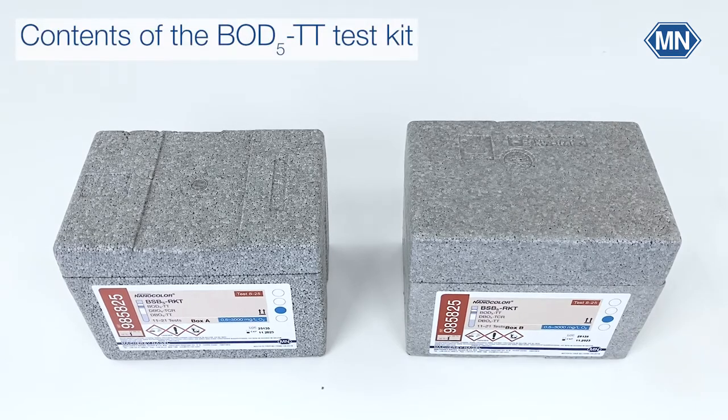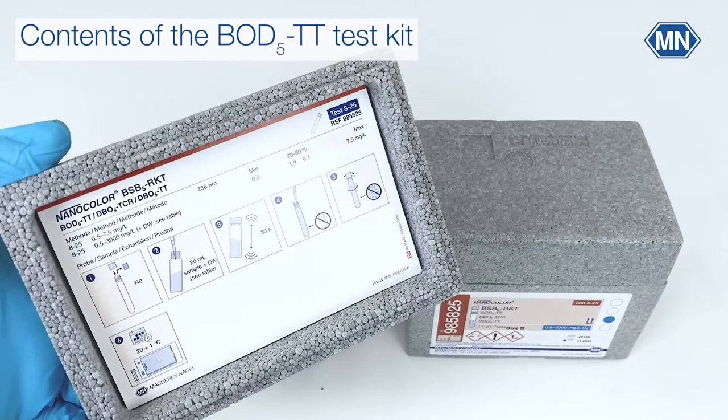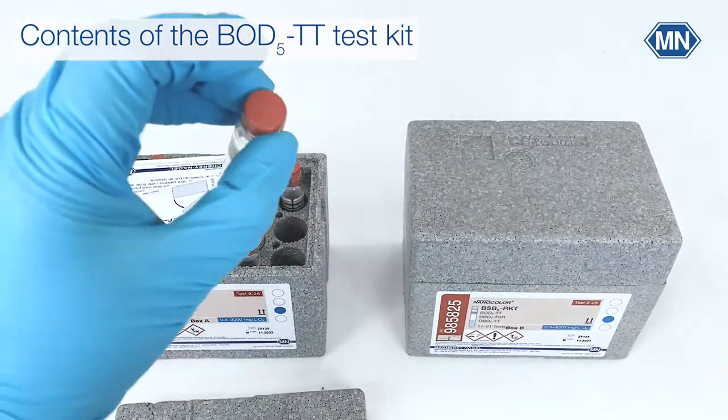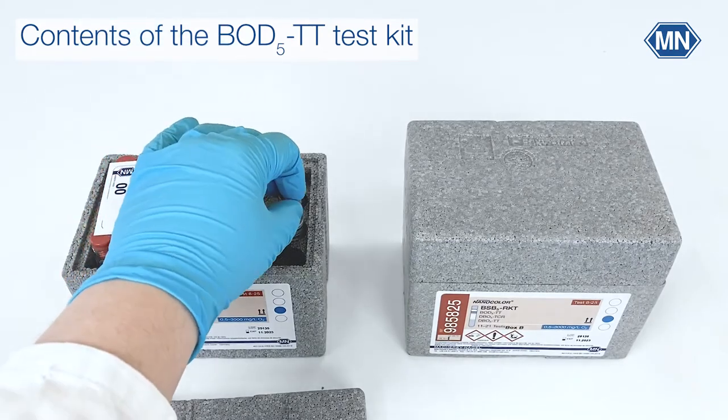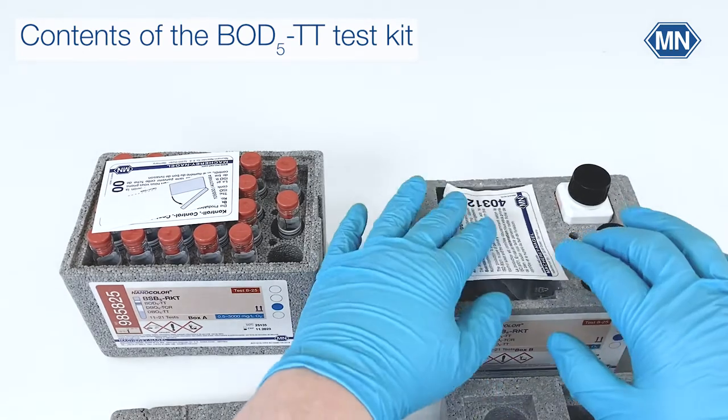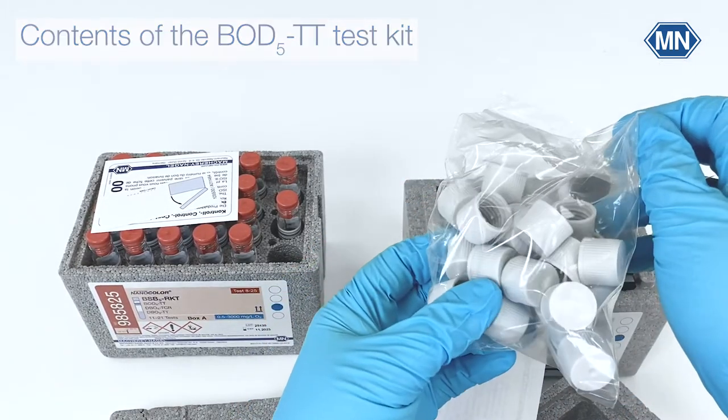Each test kit comes with two boxes. In box A you will find the pictogram instructions in the lid. You will also find 22 test tubes with rubber stoppers. In box B you will find additional reagents and also 22 screw caps for closing the test tubes again.